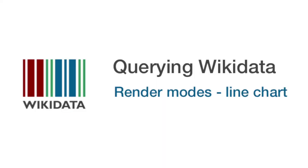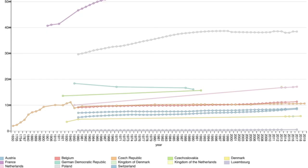There are other rendering types, such as the line chart — for example the population development of neighboring countries of Germany. We don't need a hardcoded list; we just ask which are the neighboring countries of Germany, get all their population data, and create a graph view. There are many other types of visualizations: image grid, area chart, tree chart. This makes it easy to explore what's in Wikidata.